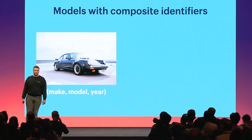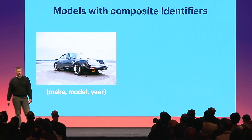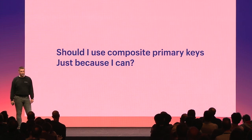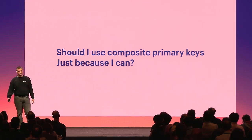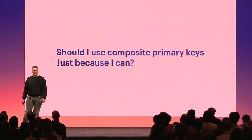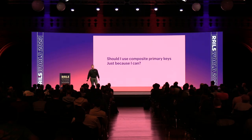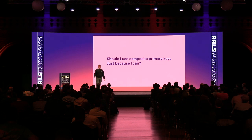Let's quickly go through real-world examples of entities that can potentially be represented by a combination of properties. A car entity can be identified by a combination of make, model, and year. A book can be identified by a combination of author and title. However, it's important to note that while these examples show the utility of composite primary keys, it doesn't mean you have to model these concepts in your real application. The decision should be based on specifics of the data and your schema design. Composite primary keys are just a tool in your toolbox — use them when appropriate.